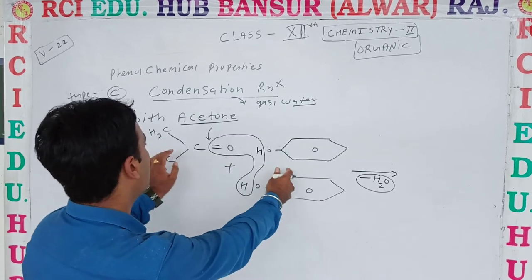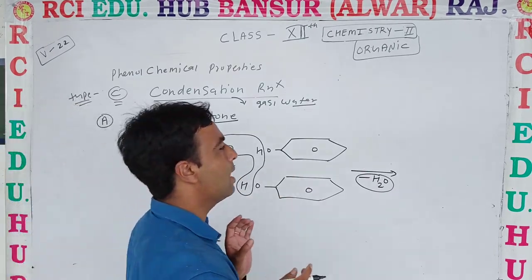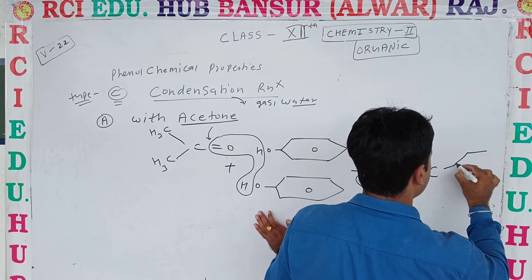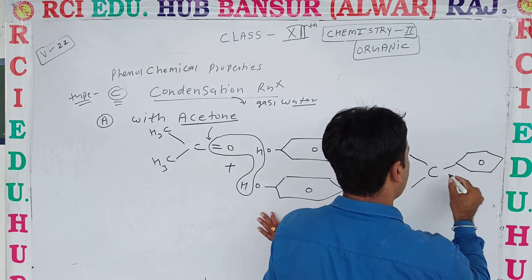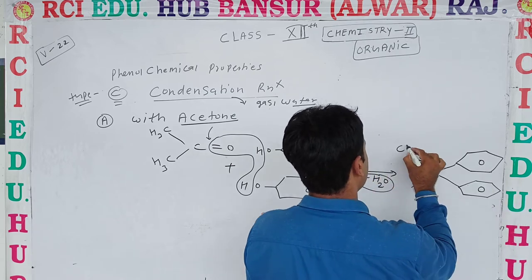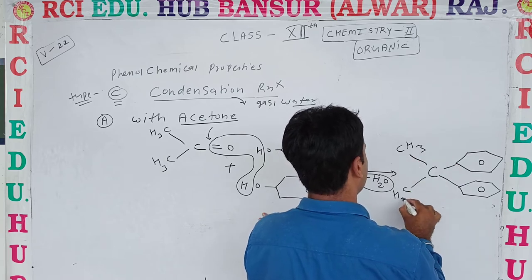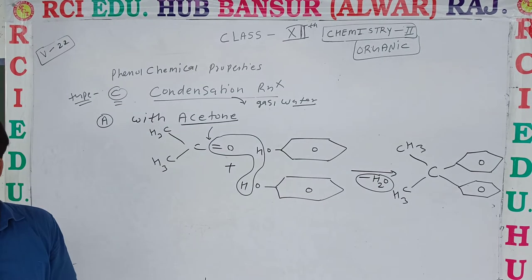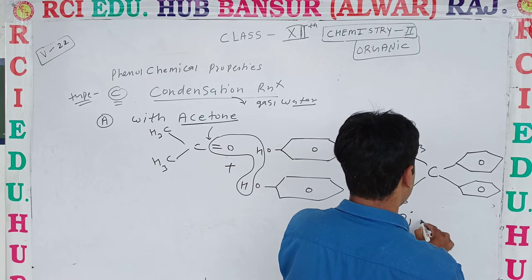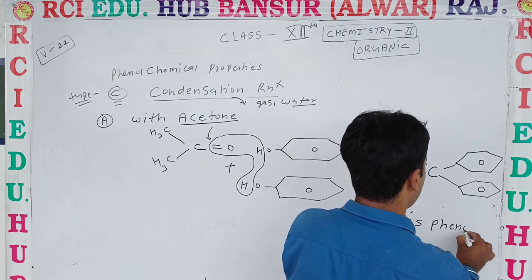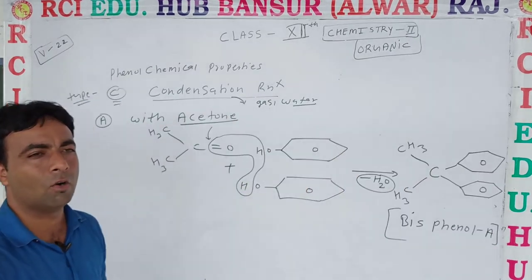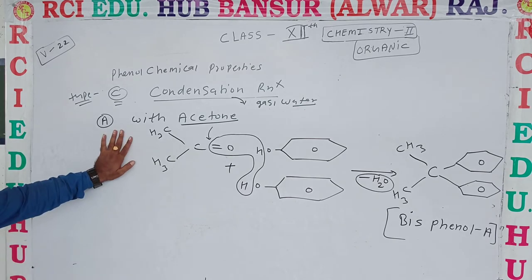This is the remaining part of the compound formation — that is called bisphenol A. What is its name? Its name is bisphenol A. This bis-compound is called bisphenol A. That is the condensation reaction of phenol.